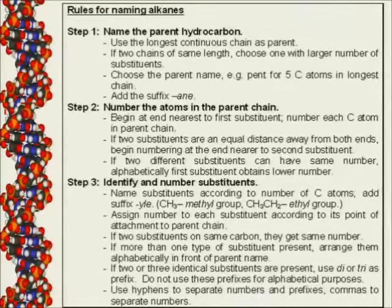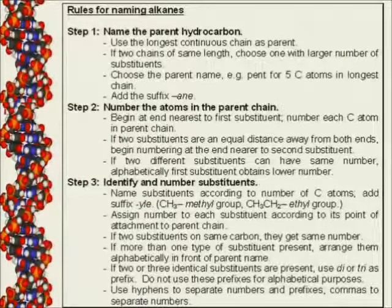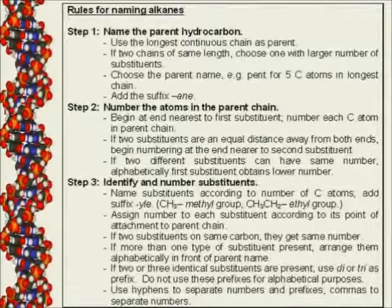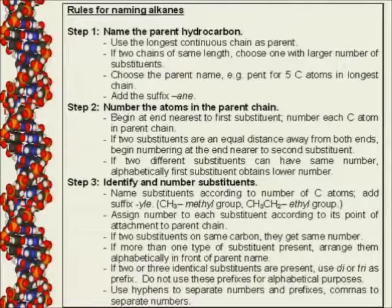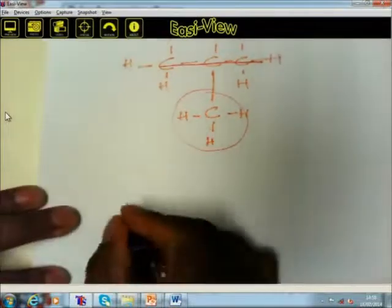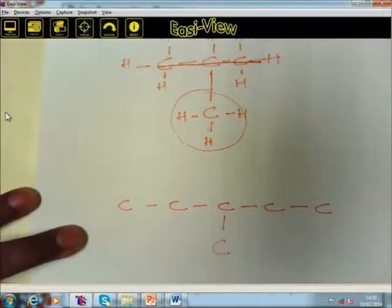Step number two: after identifying your substituent, you must number the carbons in the parent chain. You number them from left to right and also from right to left, because this helps you check which numbering is correct. For example, if we have five carbons in our long chain — 1, 2, 3, 4, 5 — and we place a substituent at carbon number 3.